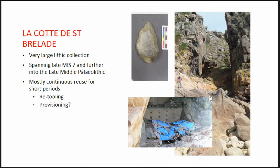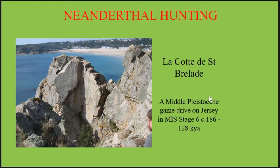It could actually represent somewhere between a provisioning and reprovisioning of the general area using local raw materials, but also almost certainly processing of animal remains. That's what you see particularly with the two famous bone heaps — the bone heaps of Layer A and Layer 6.